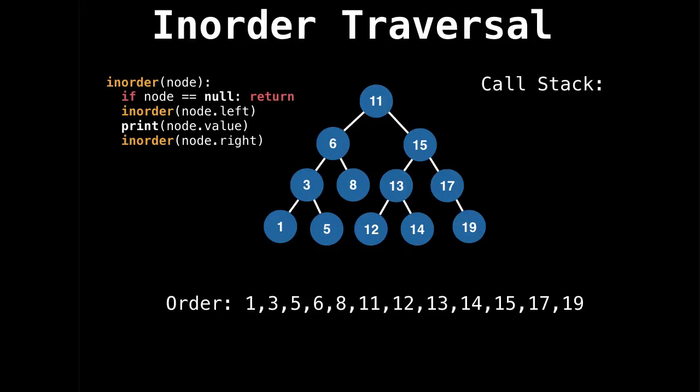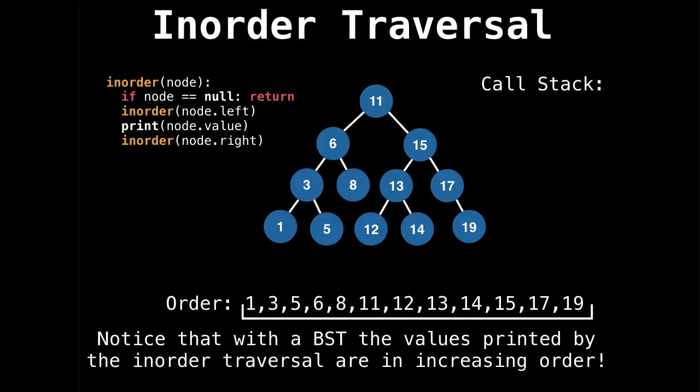Did you notice something interesting happened when we did our inorder traversal? What happened was we printed the values of the nodes in increasing order, which is why it's called an inorder traversal. If you do it on a binary search tree, it prints the values in increasing order, which is really neat. That's quite a nice property of the inorder traversal.